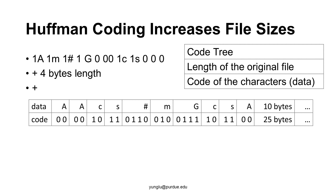Consider this example shown earlier. The postorder traversal generates this description: 1, A, 1, M, 1, pound sign, 1, G, 0, 0, 0, 1, C, 1, S, 0, 0, 0. The data may be expressed as 0, 0 for A, 0, 0 for A, 1, 0 for C, 1, 1 for S, etc.